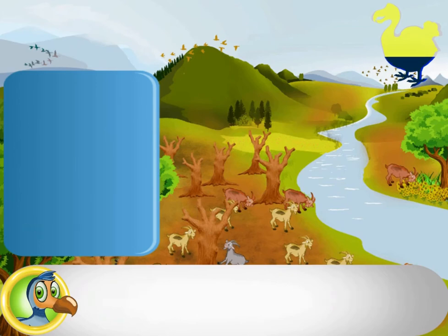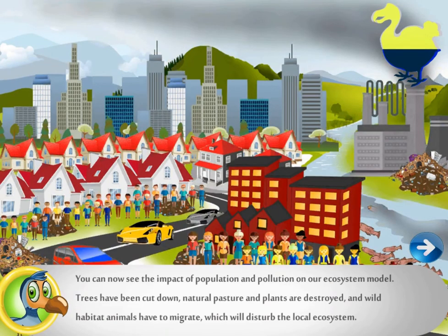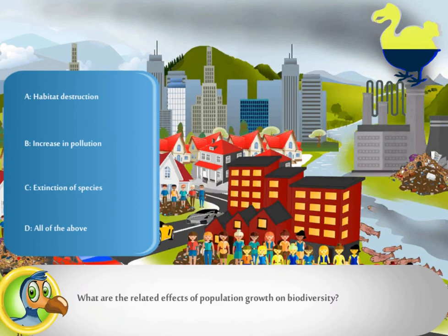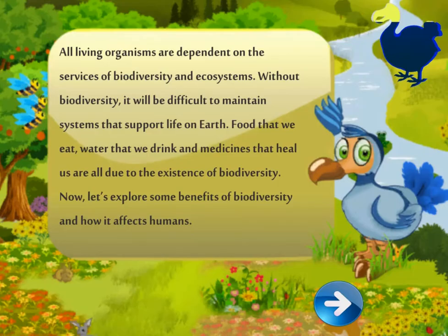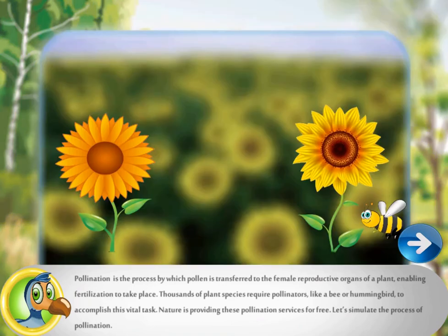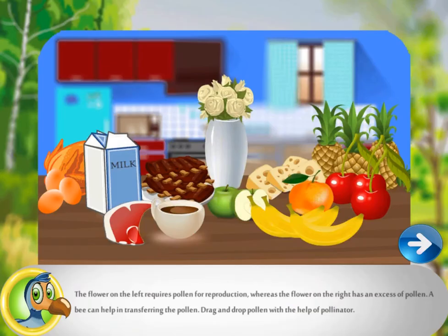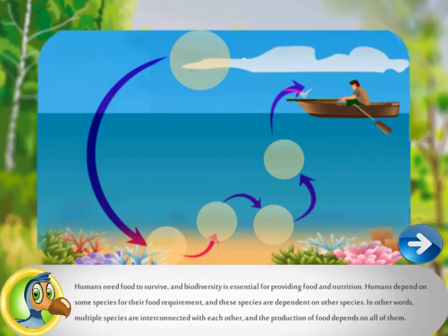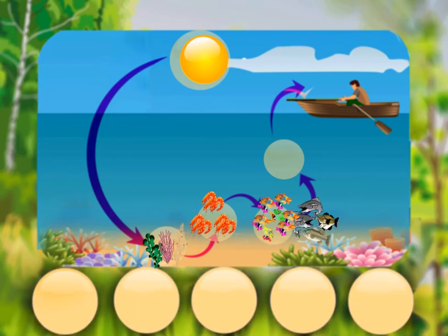Play a variety of interactive activities. Use the mouse to click and drag and drop the correct options into the empty boxes for answering the questions asked. Click on the green arrow and explore the four effects that humans have on biodiversity. Answer quiz questions by selecting the correct answer to progress to the next stage. You will also simulate the process of pollination by dragging the bee from one flower to the next.